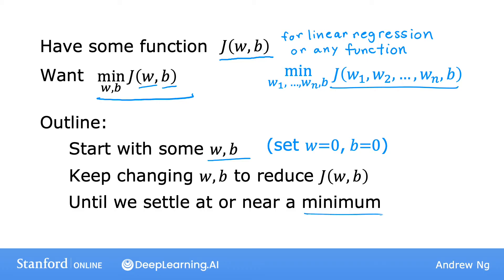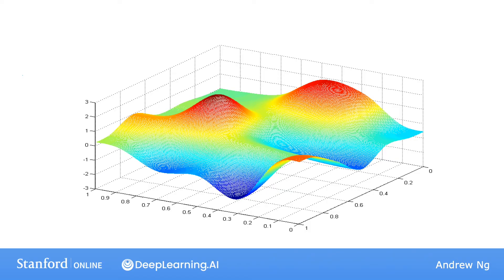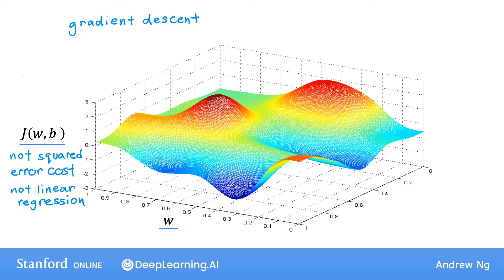One thing I should note is that for some functions J that may not be a bowl shape or a hammock shape, it is possible for there to be more than one possible minimum. Let's take a look at an example of a more complex surface plot J to see what gradient descent is doing. This function is not a squared error cost function. For linear regression with the squared error cost function, you always end up with a bowl shape or a hammock shape. But this is a type of cost function you might get if you're training a neural network model. Notice the axes—w and b are on the bottom axes. For different values of w and b, you get different points on this surface J(w,b), where the height of the surface at some point is the value of the cost function.